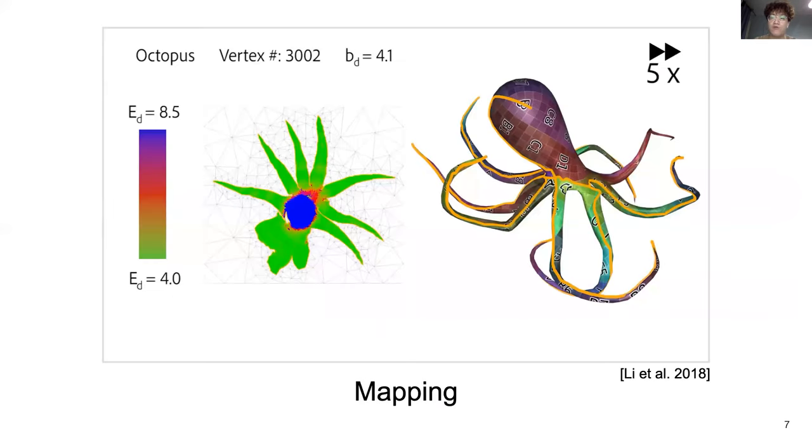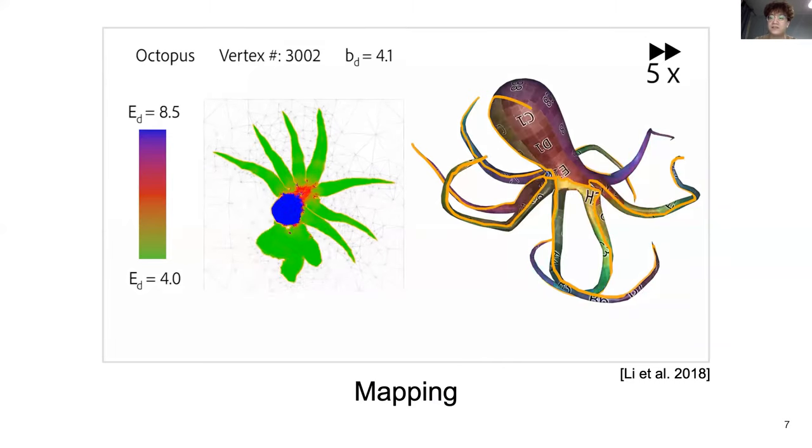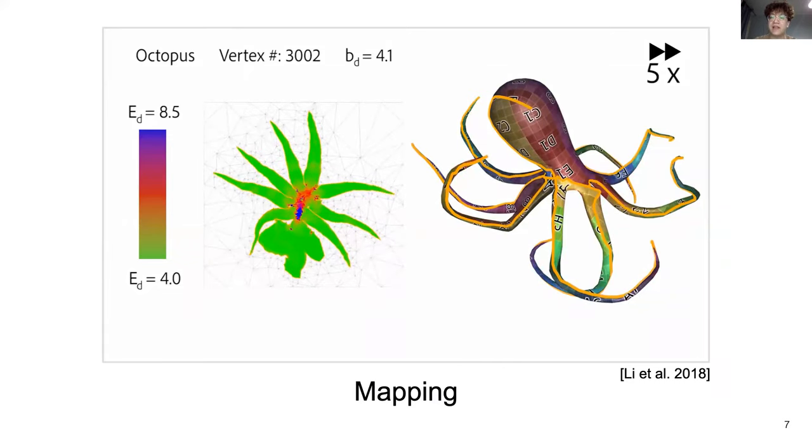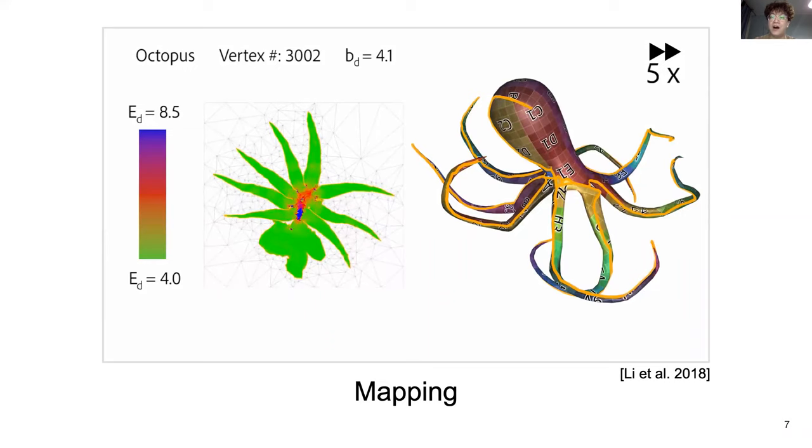Likewise, for high-quality applications of parameterizations, artists generally require maps that are both non-inverting and non-overlapping.